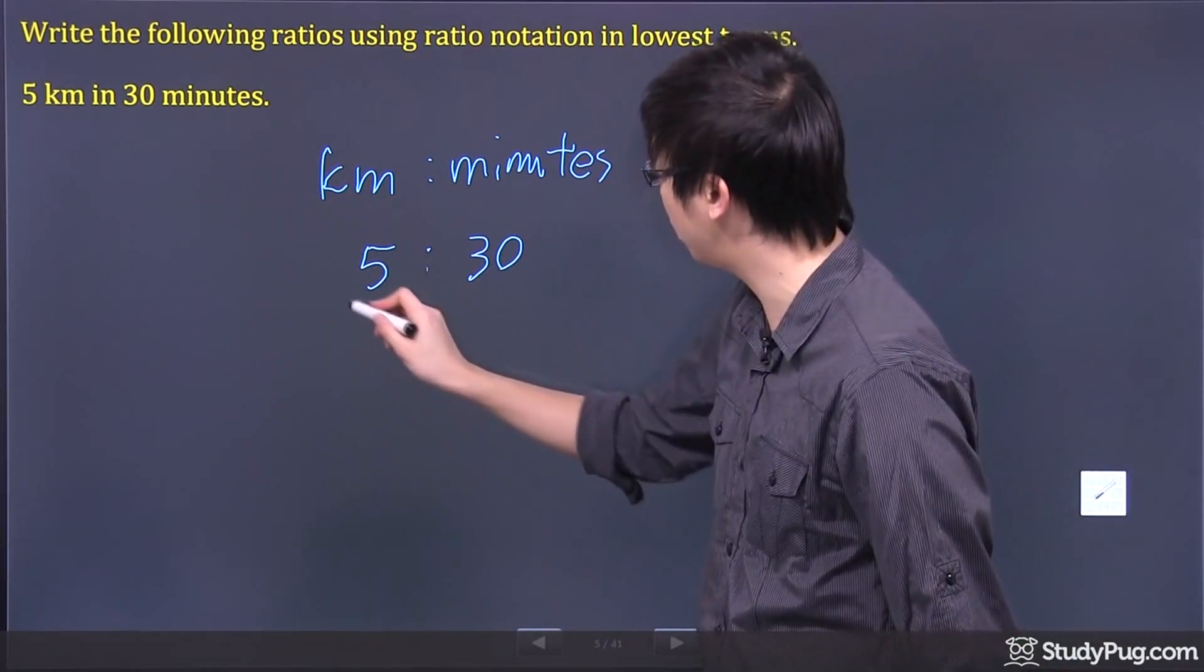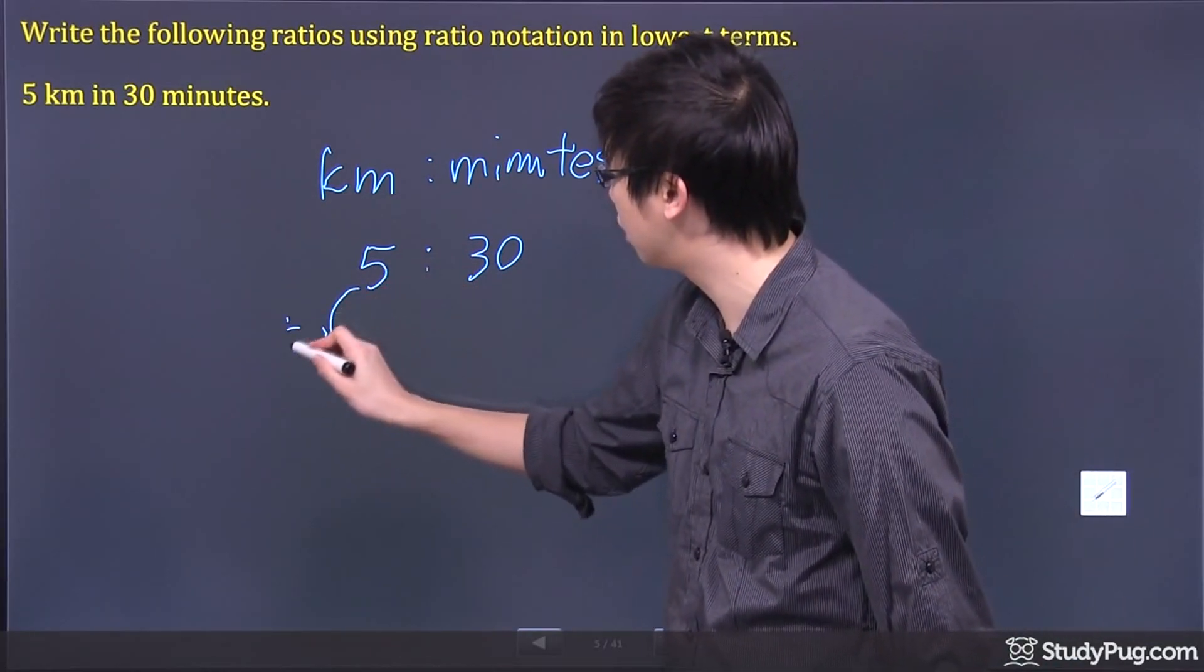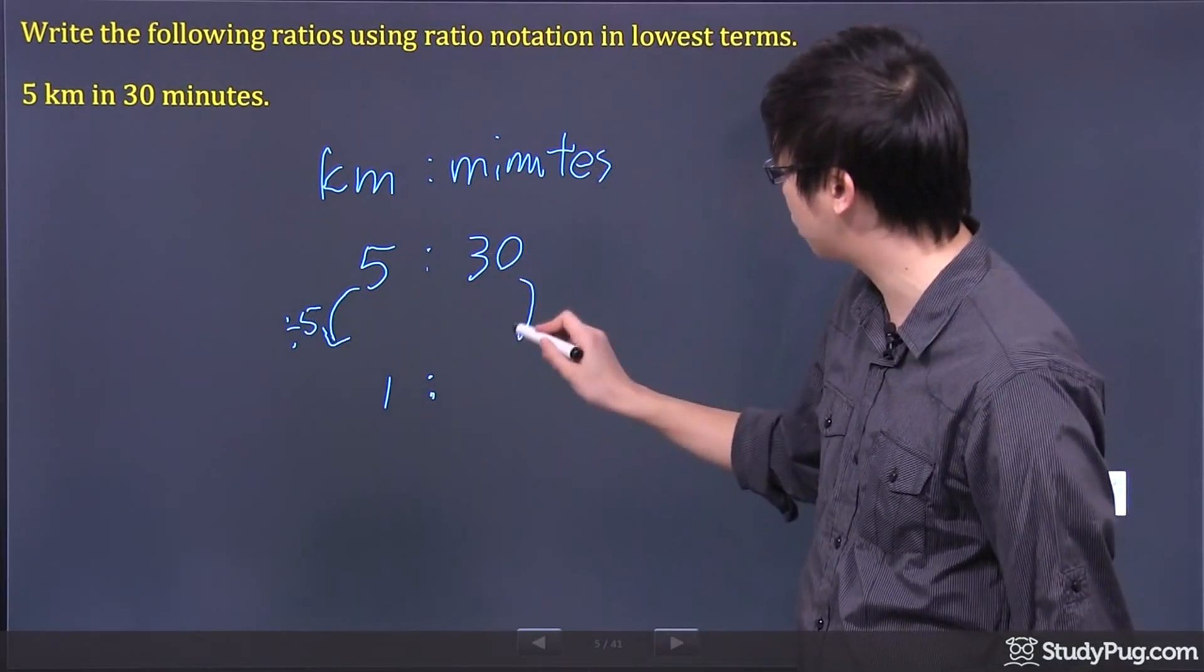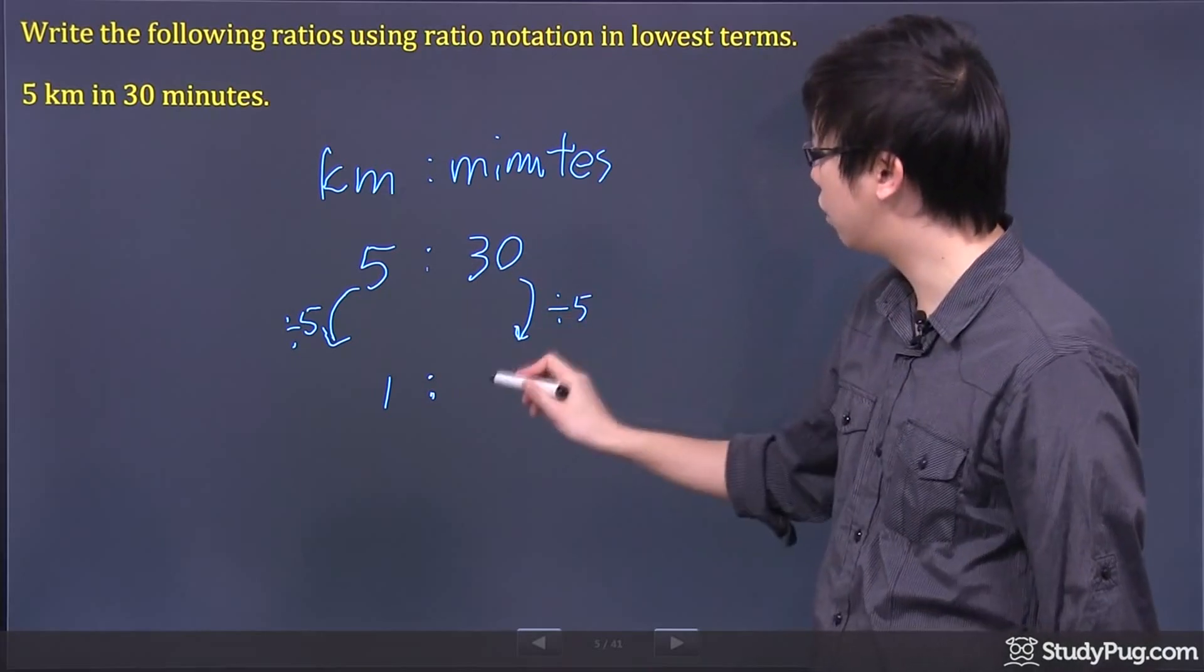If you divide this by five, you get one. Let me just show the work. So if you take this, divide it by five, you get one right here. And if you take this one here, divide it by five as well, you get six.